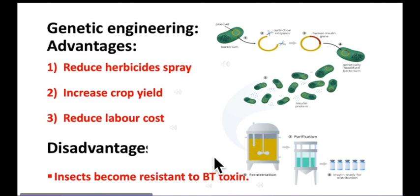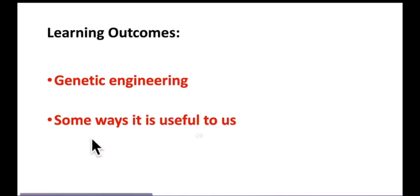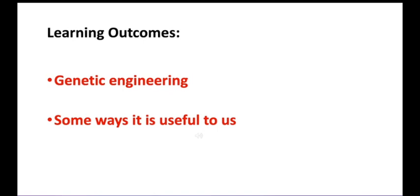I hope all of you understood it very well. At the end of this lecture, you are able to understand genetic engineering. We discussed examples such as insulin production and genetically modified crops, some ways in which genetic engineering is useful to us, arguments against the use of GM crops, and the advantages and disadvantages of genetic engineering. If you have any doubt, just go through your textbook. This is all about the biotechnology chapter — thank you so much, take care, bye bye.